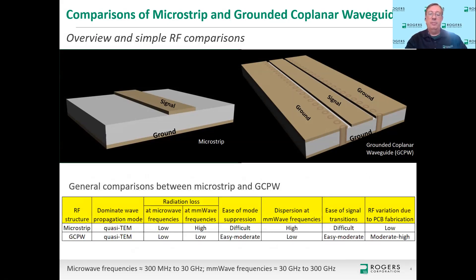As a quick general comparison — and I will admit this is very subjective — it's a good thing to go through to give you an idea of comparisons between these RF structures. The far left column lists the RF structures: MicroStrip and Grounded Coplanar Waveguide. The dominant wave propagation mode for both of these is the same: it's a quasi-TEM wave. There are other wave propagation modes that can propagate on these structures, such as a hybrid TE wave or a hybrid TM wave.